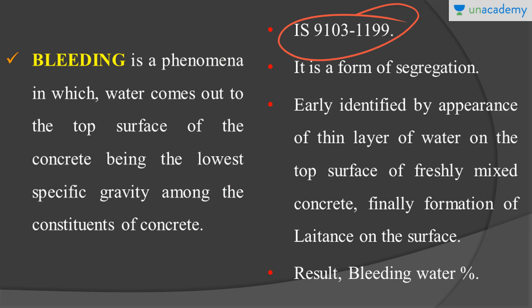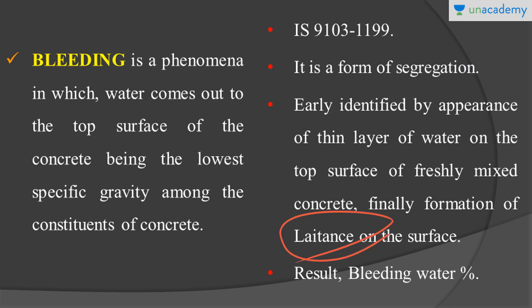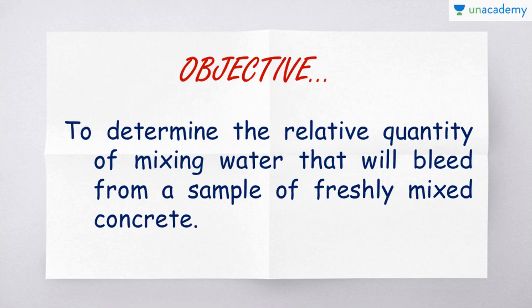Bleeding is another form of segregation itself. It is early identified by the appearance of a thin layer of water on the top surface of freshly mixed concrete and finally the formation of laitance on the surface. Laitance is a scum-like substance that forms on the top surface, which is the mixture of water and cement that comes out from the matrix of the concrete. The result of this experiment is the bleeding water, which is expressed in percentage.